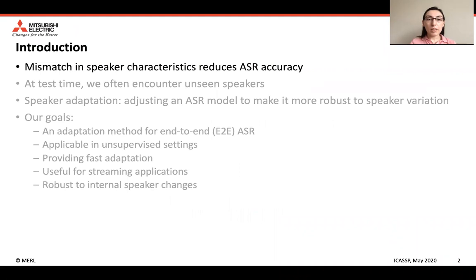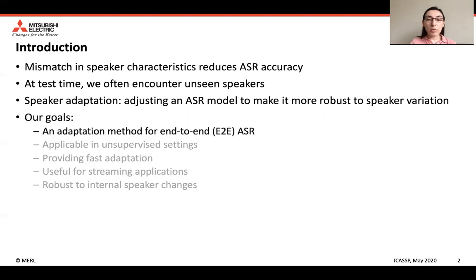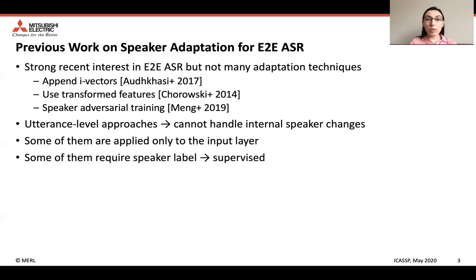As we all know, mismatching speaker characteristics reduces ASR accuracy. Especially at test time, we often encounter unseen speakers with various characteristics that increase the word error rate. To mitigate this problem, several speaker adaptation techniques have been proposed. The aim of speaker adaptation is to adjust an ASR model to make it more robust to speaker variation. Some of these approaches are appending speaker i-vectors to the inputs, using speaker-transformed features, or using speaker adversarial training.